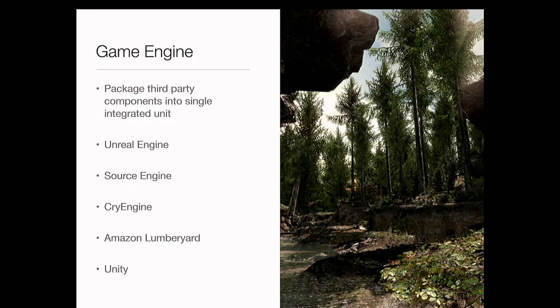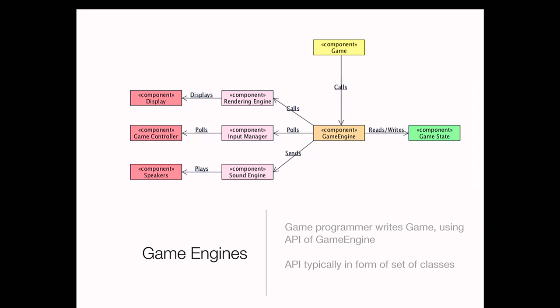What game engines do is take all of these components, package them into one place, provide extensibility if you need it, and let the programmer not have to worry about any system-specific stuff — so they can focus on creating their game rather than worrying about how to draw something on a PC versus an Xbox. If you're using a game engine, your game component does not directly call the rendering engine, input manager, sound engine, or physics engine. Instead it calls the game engine, and the game engine figures out where that request needs to go. If the game decides it needs to update the physics, it asks the game engine, and the game engine calls whatever physics component is appropriate.